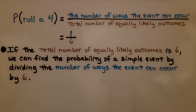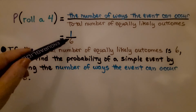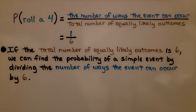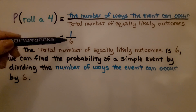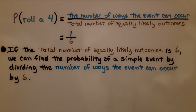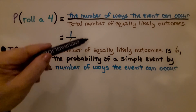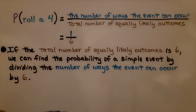If the total number of equally likely outcomes is six, we can find the probability of a simple event by dividing the number of ways the event can occur by six. If it were ten, we divide by ten; if twenty, divide by twenty; if one hundred, divide by one hundred, and so on.